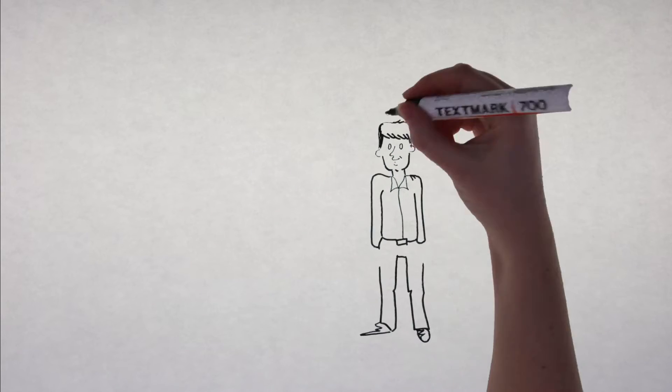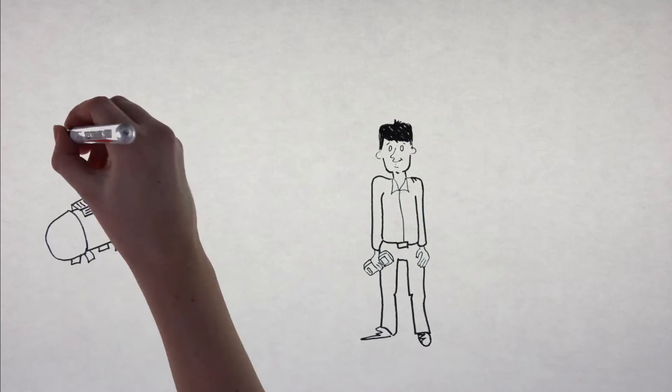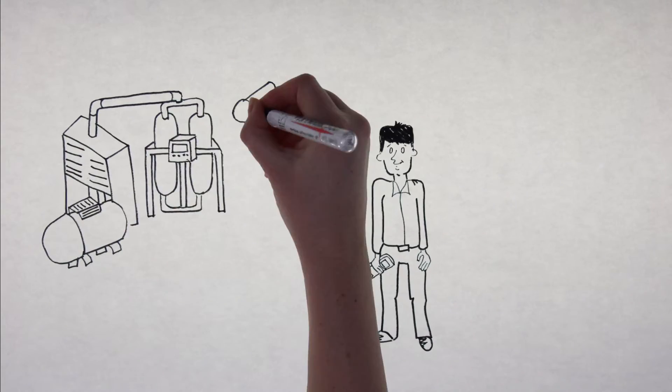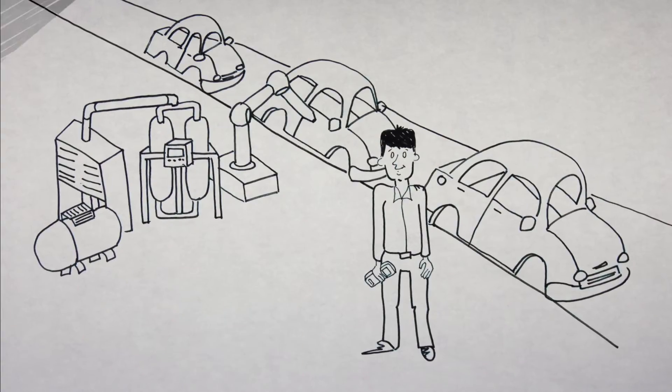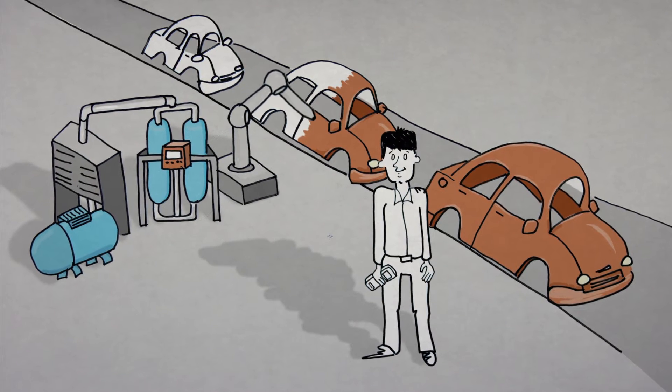This here is Bob, a plant engineer in a large automobile production facility. The robots and all the pneumatic tools in the assembly line use compressed air, and it's Bob's responsibility to make sure the air is clean and dry.